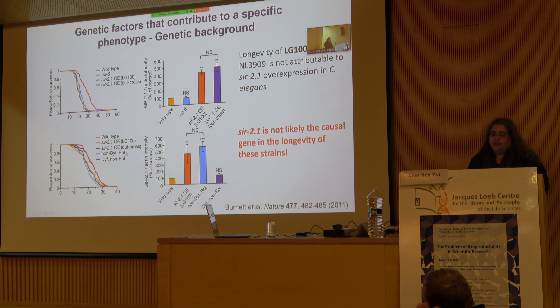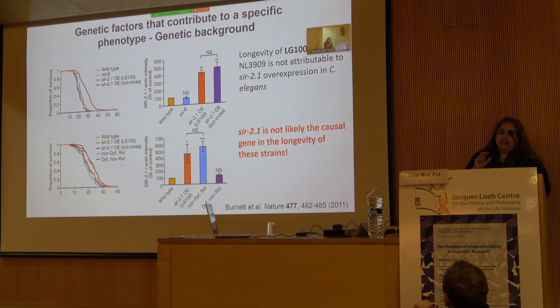They showed that SIRT2 appeared to extend lifespan, but then they backcrossed it into wild-type background several times, following the gene not the phenotype. When they did that, the backcrossed SIRT2 no longer extended lifespan. They found a different background mutation affecting neuronal function — a mutation known to affect lifespan — and were able to separate it and show the lifespan extension went with that mutation, not SIRT2. So there was a hidden background mutation giving the phenotype, and if you followed up by tracking the phenotype through crosses, you would conclude SIRT2 was extending lifespan — but it wasn't.